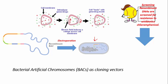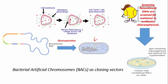We grow our bacterial culture on an agar plate containing chloramphenicol and a substrate for beta-galactosidase. Here we use X-gal as a substrate for beta-galactosidase. Beta-galactosidase converts X-gal into glucose and galactose, producing a blue color.